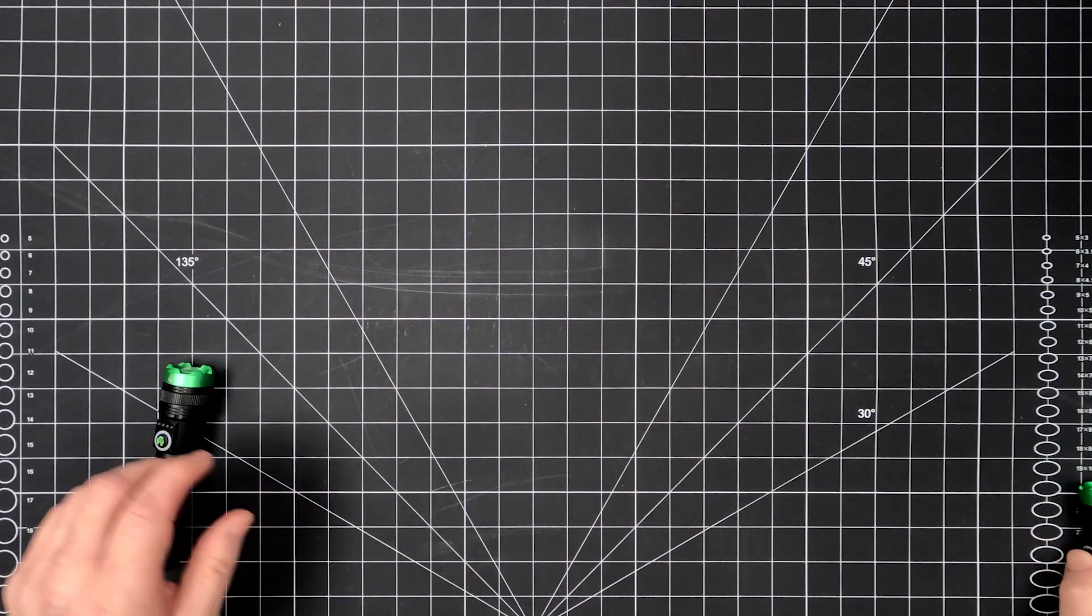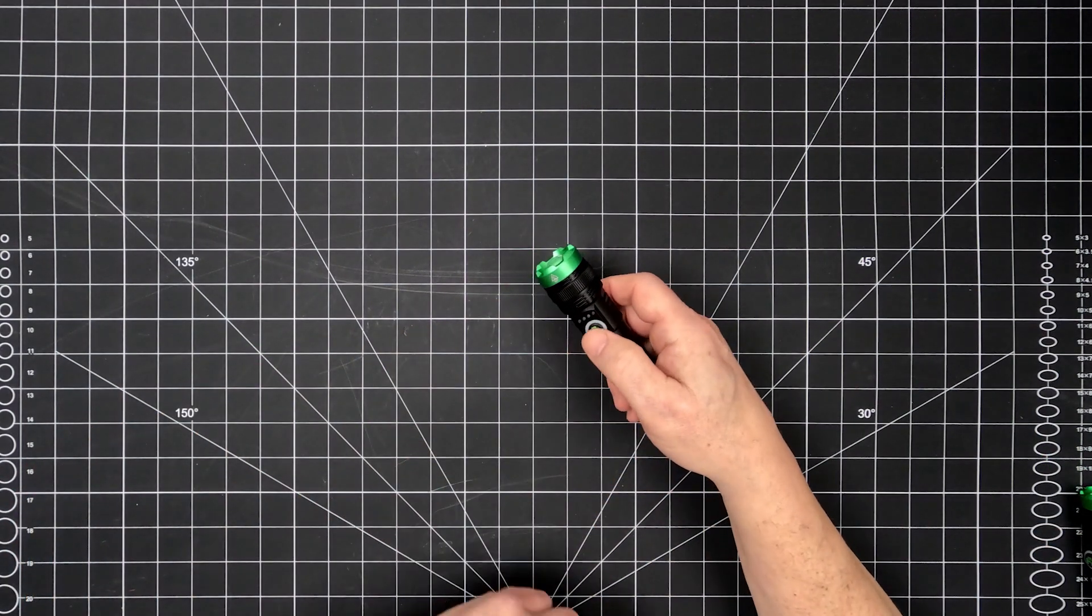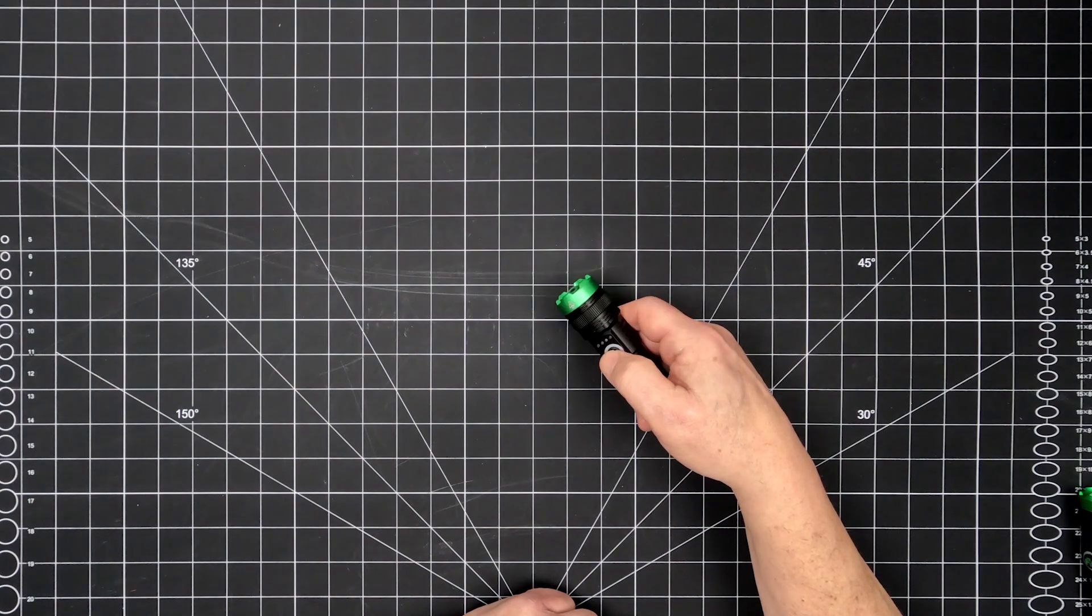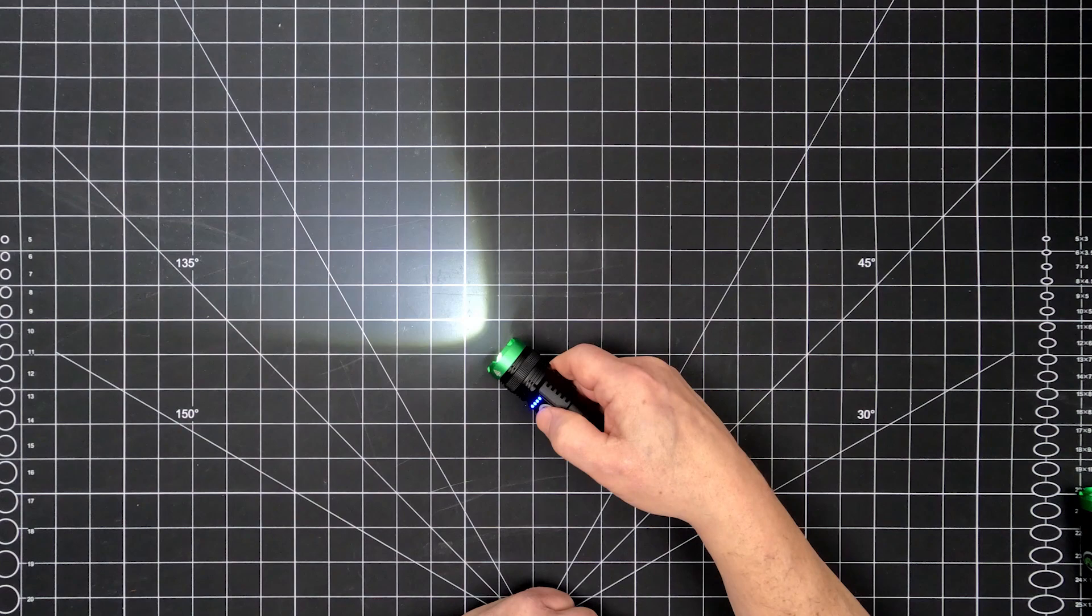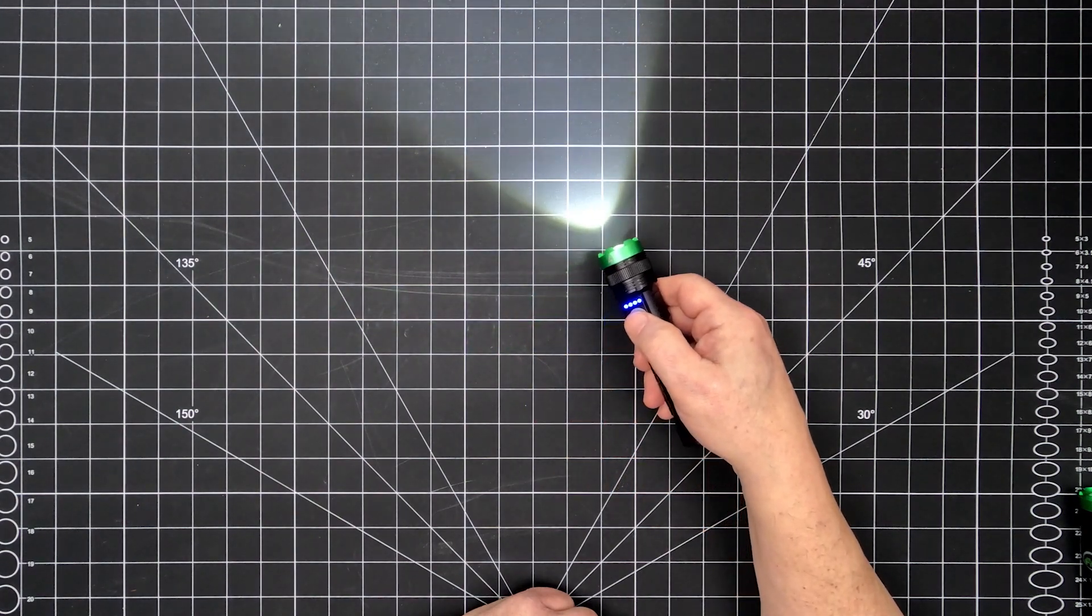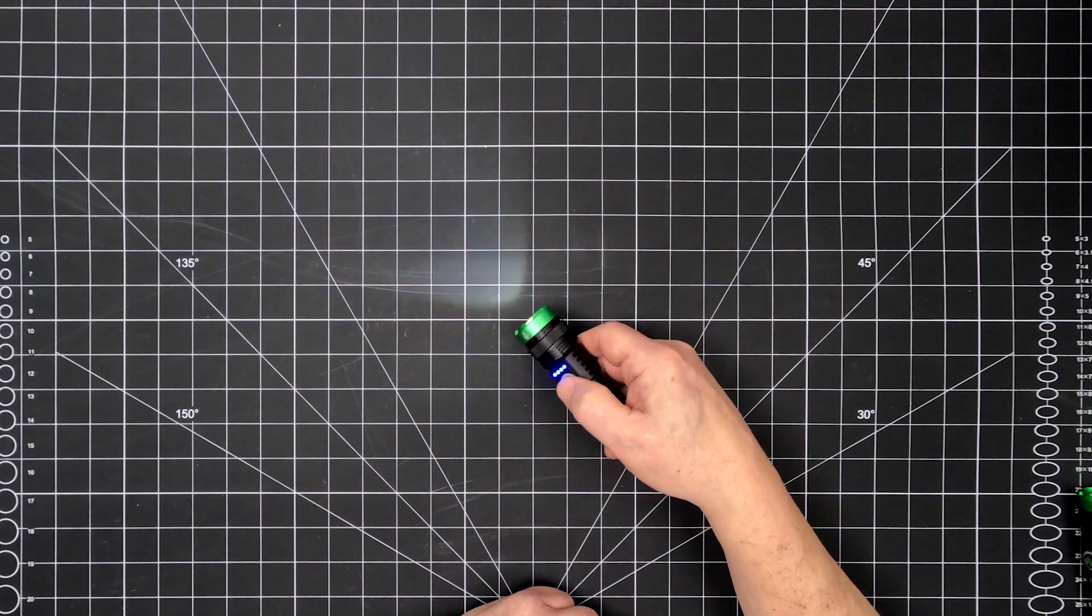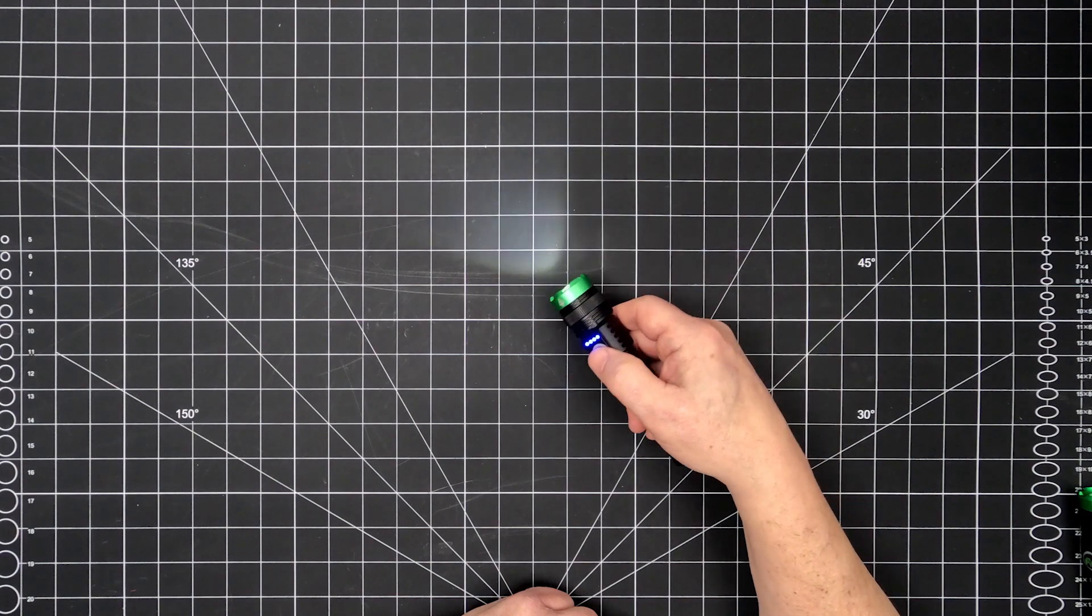The 2K model is 2000 lumens on high with a 2 hour runtime and 728 foot light throw. Medium is 1000 lumens with a 4 hour runtime and low is 70 lumens with an 11.5 hour runtime.